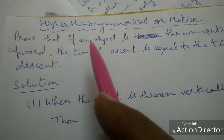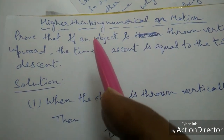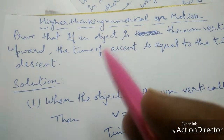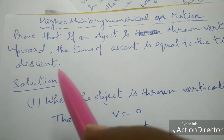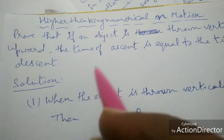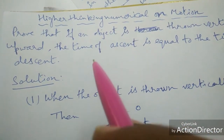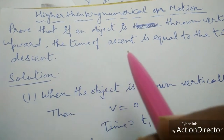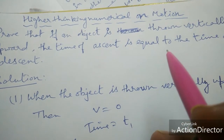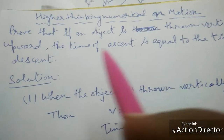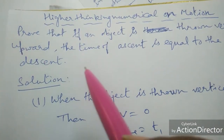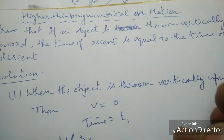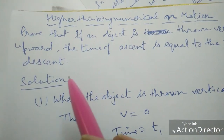Higher thinking numerical on motion. The statement of the numerical is: prove that if an object is thrown vertically upward, the time of ascent is equal to the time of descent.